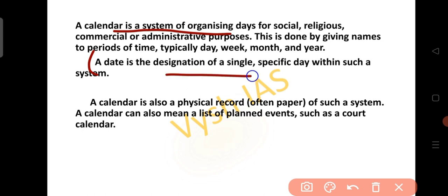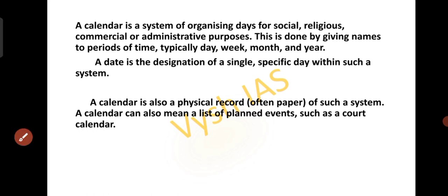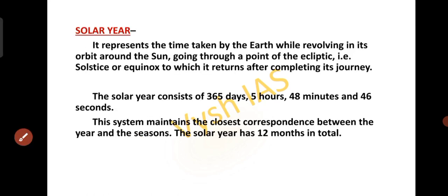A date is the designation of a single specific day within such a system, and a calendar is a physical record, which is often a paper. In India, we have various systems that came into work at different times to mark the commencement of the new year. The calendars across various regions of India are: solar system, lunar system and lunisolar system.